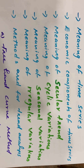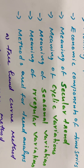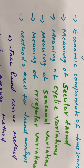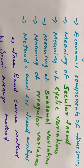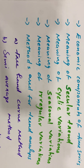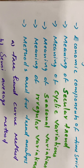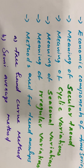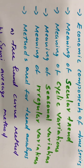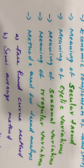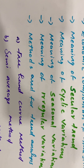Secular trend refers to the general tendency of data to grow or decline over a long period of time. The general tendency of data to grow or decline over a long period of time is called a secular trend.